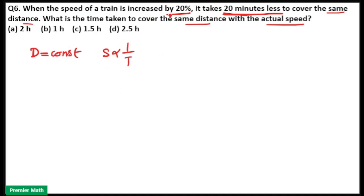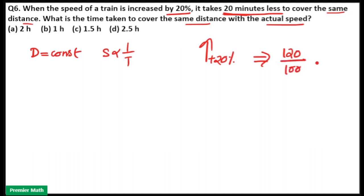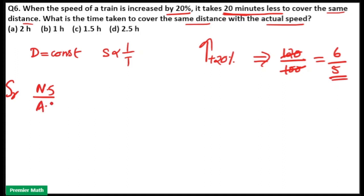Speed of the train is increased by 20%, which is equal to 20 plus 100 = 120%. That is 120 by 100. Taking the ratio: 20 × 6 = 120 and 20 × 5 = 100, so 6 by 5 is the speed ratio. Speed ratio means new speed divided by actual speed, which is equal to 6 by 5.